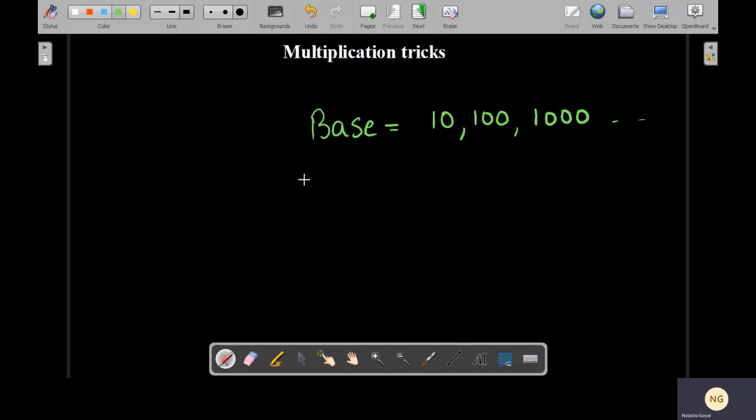Now let's start with a simple one digit multiplication. So let's suppose we have to multiply 9 times 8. Now here both the numbers are close to 10, so we can say the base is 10.